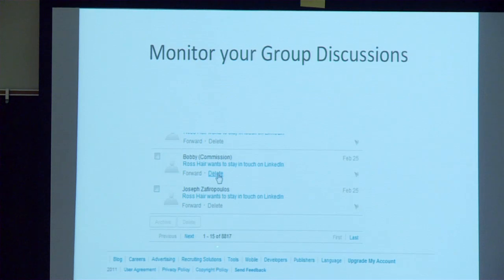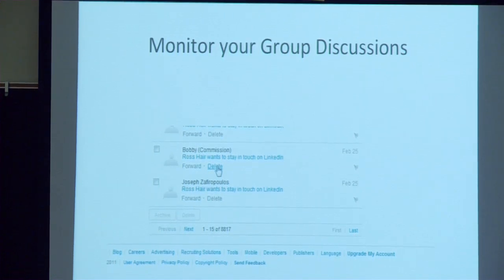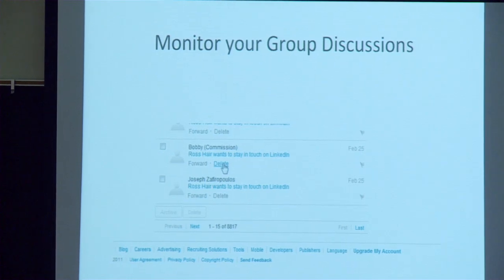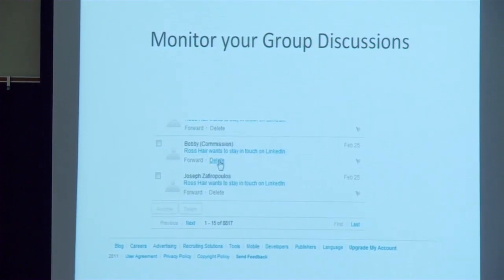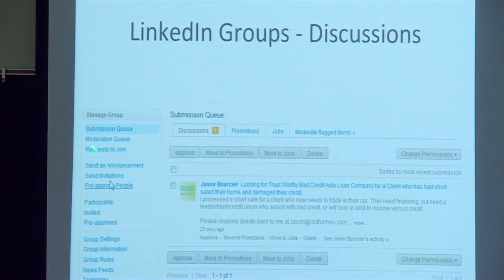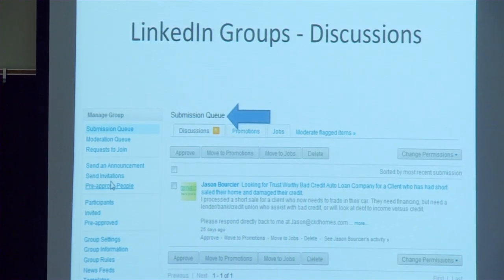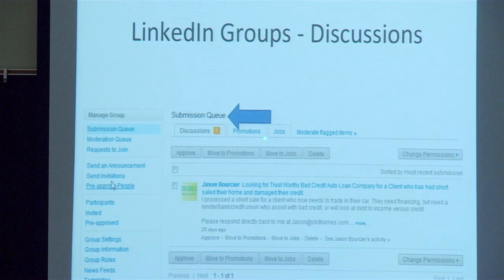You can also monitor your group's discussions. If something coming through your group isn't appropriate or relevant, or someone is spamming, you can simply hit delete. You can set up your group so that incoming posts land in what's called a submissions queue — the post sits there parked, waiting for you to approve or disapprove. Or you can move it to a more appropriate section, like Promotions or Jobs. Within a group you can have a discussion, post a promotion, or post a job, so you can move content to the appropriate part of your group.